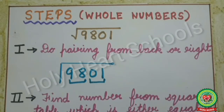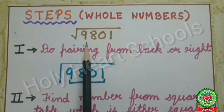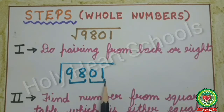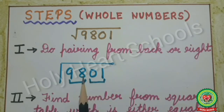Let's discuss all the steps used in finding the square root by long division method. Here we are finding the square root for whole numbers — a number without decimals. Our example is square root of 9801. The first step is pairing from the back or right. We do the pairing like this from the back: 01 is the first pair, 98 is the second pair.